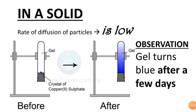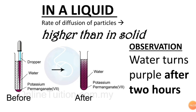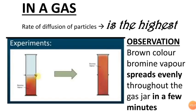In the solid, rate of diffusion of particles is low. In the liquid, the rate of diffusion of particles is higher than in solid. This potassium permanganate, the color is purple. Observation: water turns purple after two hours. Diffusion in gas is the highest. The brown color bromine vapor spreads evenly throughout the gas jar in a few minutes.